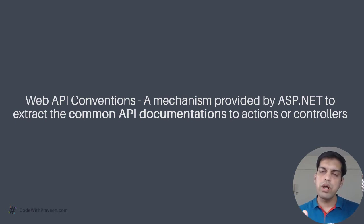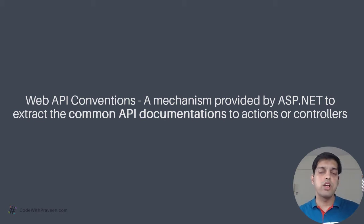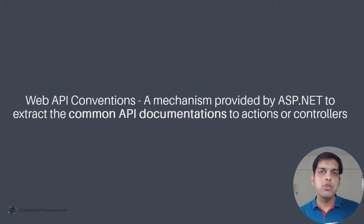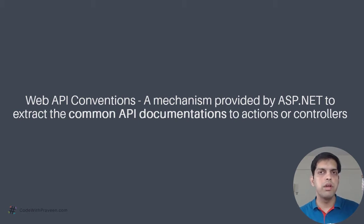When you are developing various controllers that include action methods, you might realize that most of them are quite similar. When you look at your controllers and the actions implemented within them, you will find that they are mostly using the action verbs: POST, PUT, GET, and DELETE. These are the four common types. Even if you have multiple controllers and multiple action methods, most likely they will fall under these four categories.